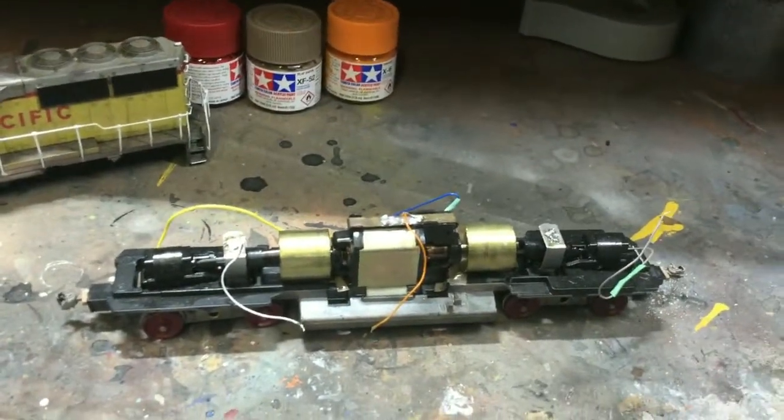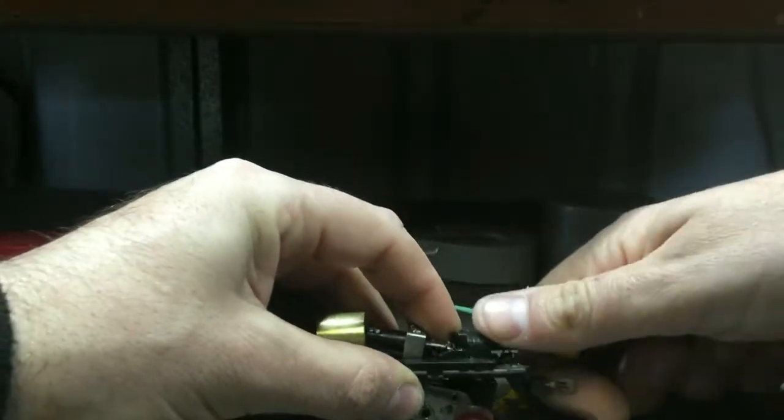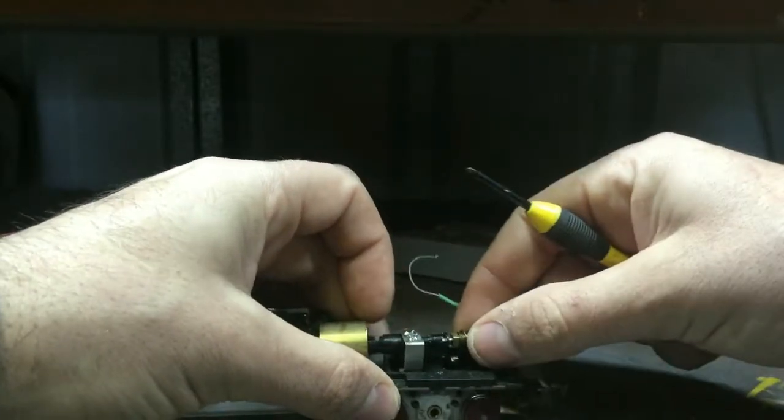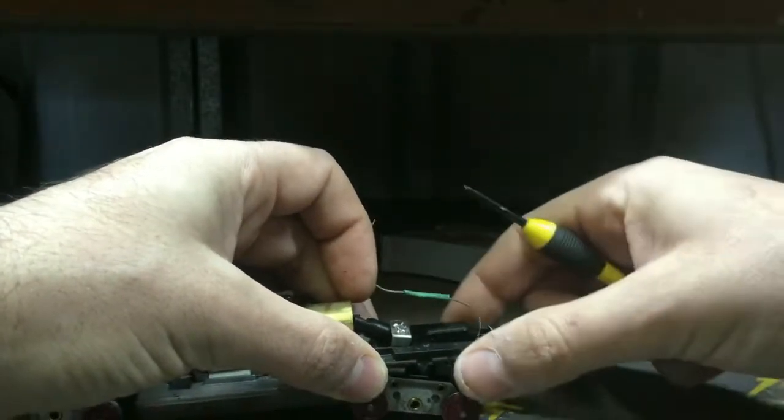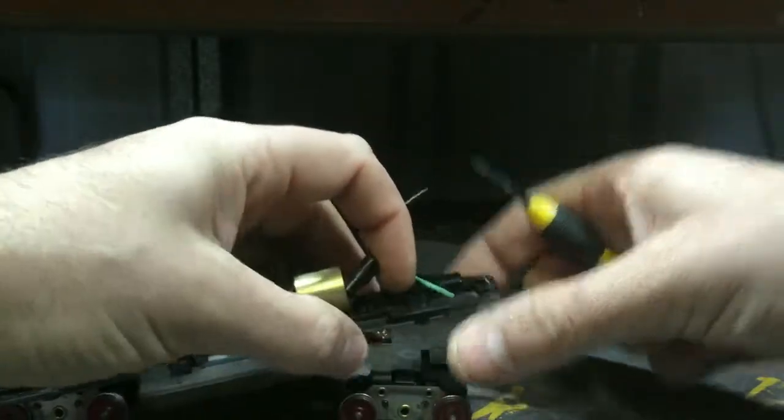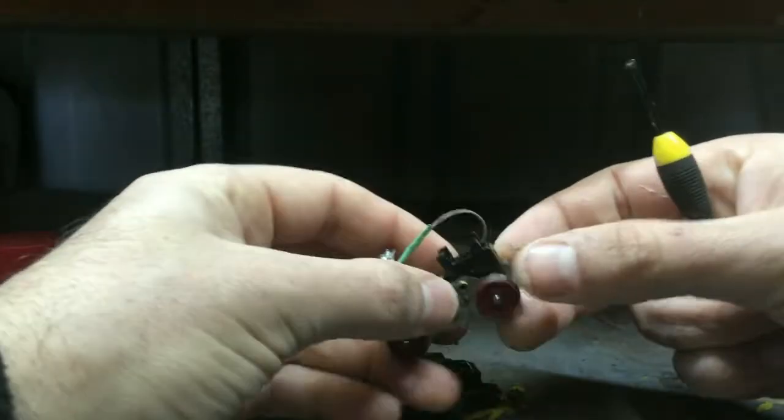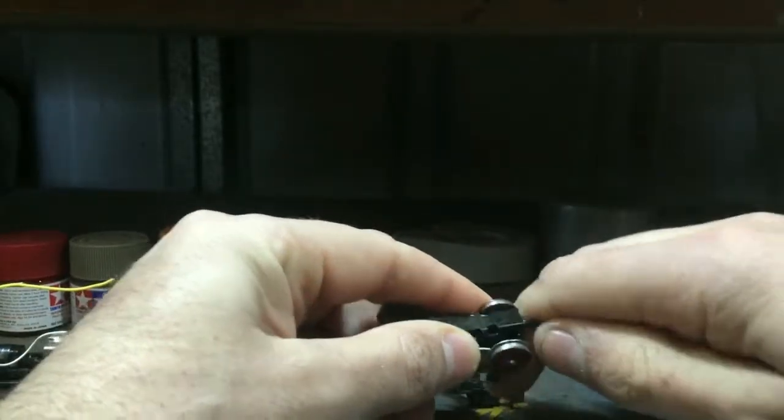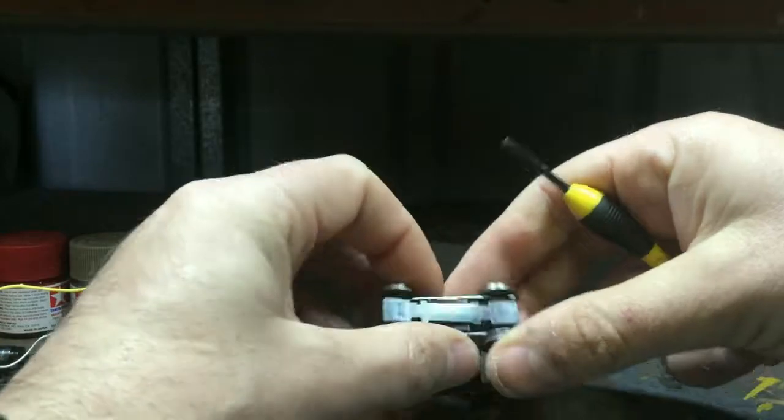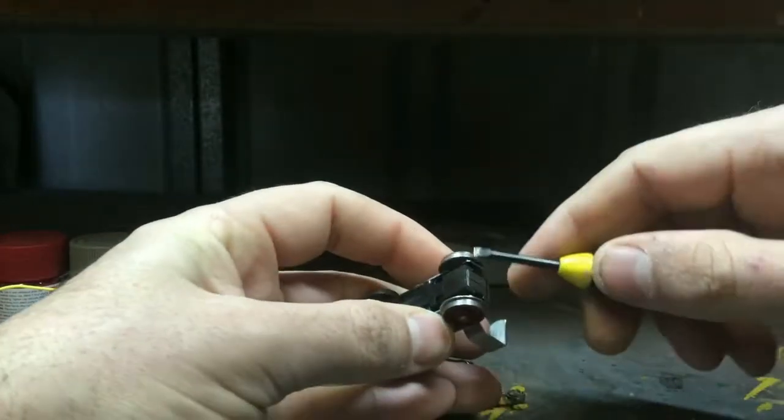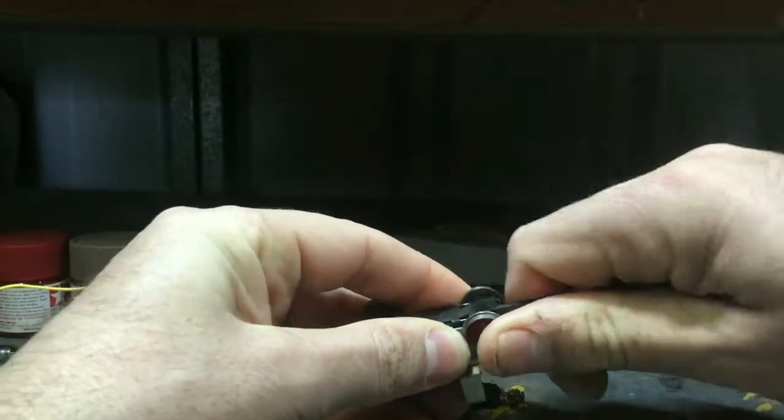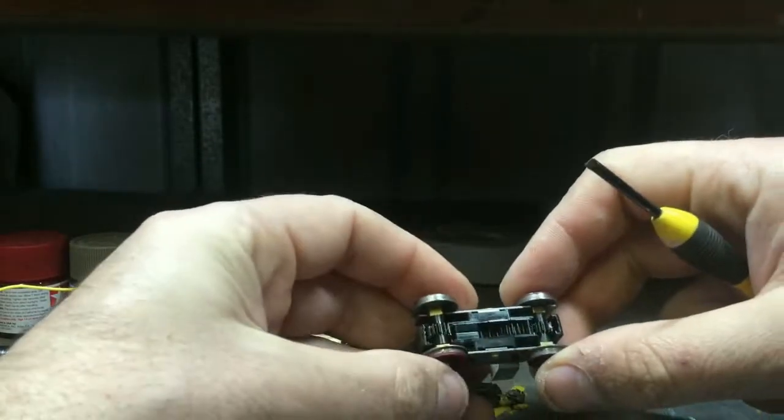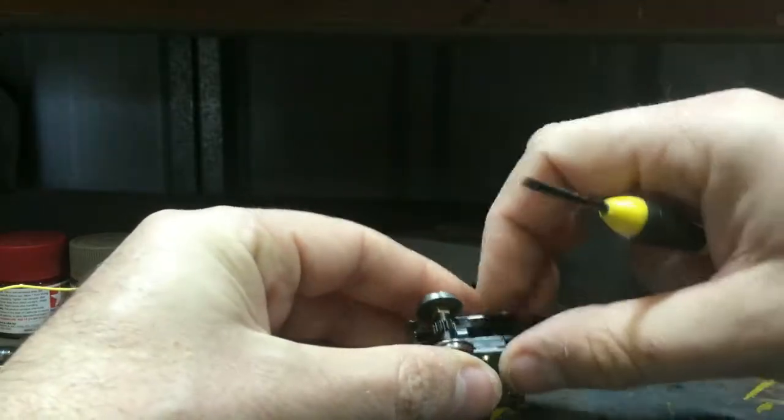To remove the truck is pretty straightforward - it's got a little tab that you undo, pull this little section out, and the whole truck just drops out. Now the trucks themselves have a little tab underneath here. Make sure you do one side and then do the other side.